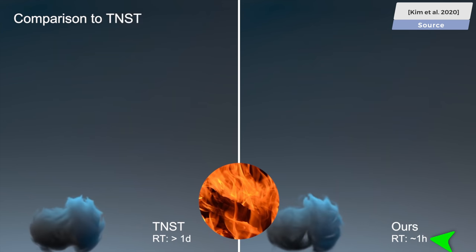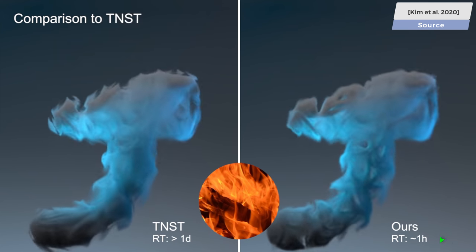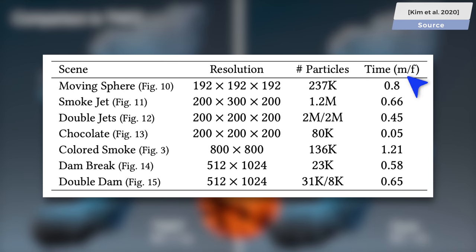So how detailed of a simulation are we talking about? Let's have a look together. M slash F means minutes per frame, and as you see, if we have tens of thousands of particles, we have 0.05, or in other words, 3 seconds per frame, and we can go up to hundreds of thousands, or even millions of particles, and end up around 30 seconds per frame. Loving it!